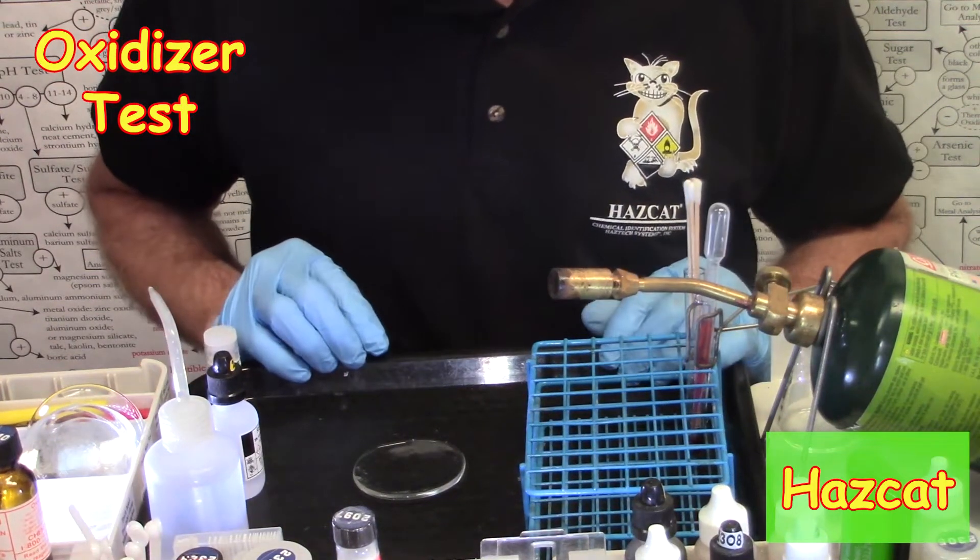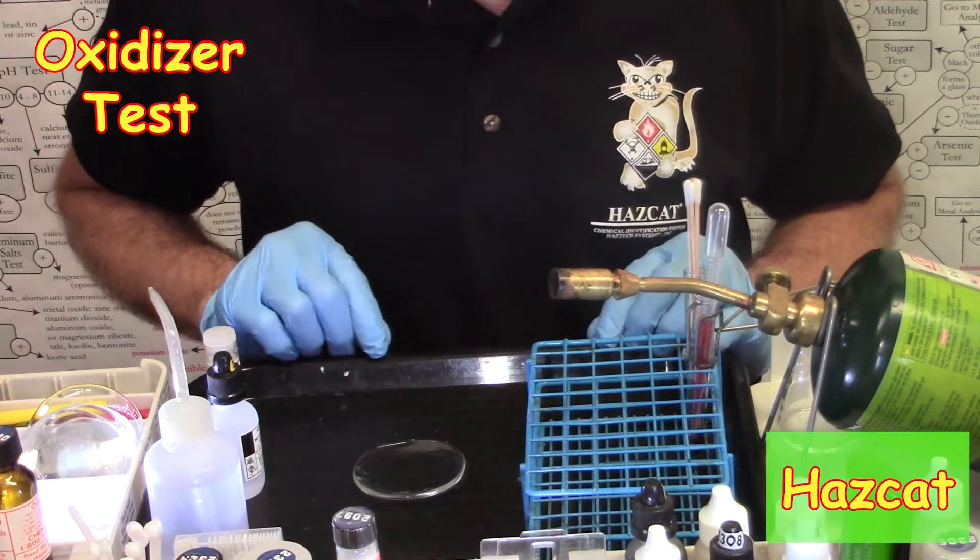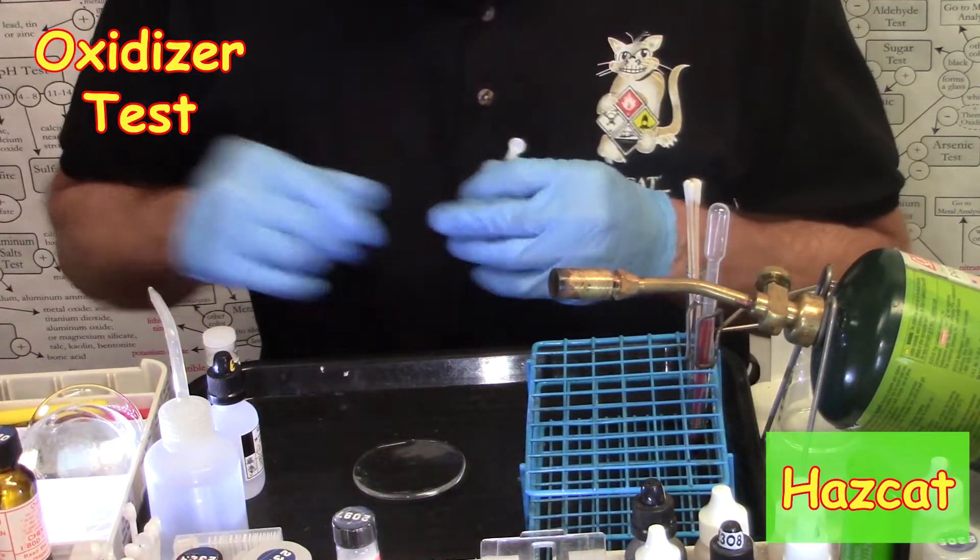Today we're going to conduct an oxidizer test. We start out by placing, if we have a solid, two spoonfuls of the unknown on a watch glass.